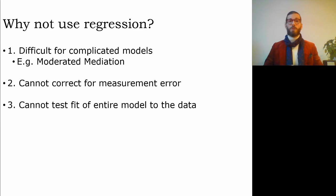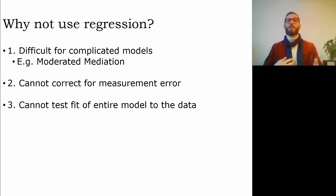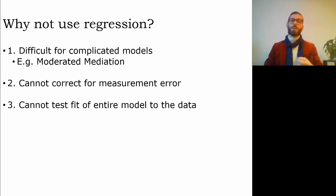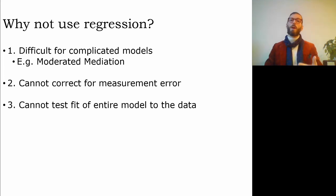This regression method is straightforward — so why not use it all the time? There are reasons: it's more difficult for complicated models, such as when an indirect effect is moderated (moderated mediation). We cannot include a measurement model in regression, so we can't use latent variables or correct for measurement error. And we cannot test the fit of the entire model to the data in one step. For all these reasons, we need structural equation modeling.